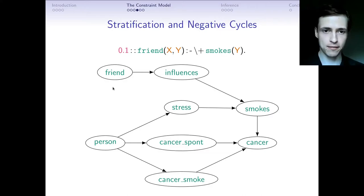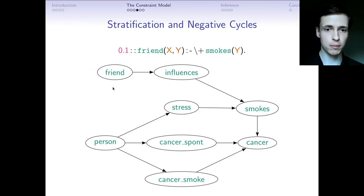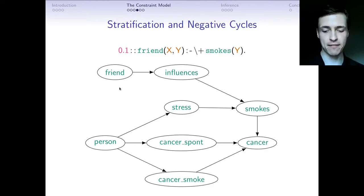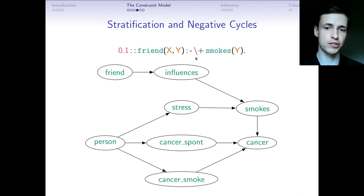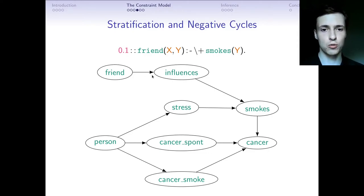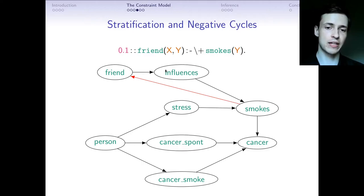The first reason to care about this graph is stratification — a condition that both logic programs and probabilistic logic programs need to satisfy to ensure a unique, well-defined answer for every query. We classify edges as positive or negative depending on whether the corresponding clause has negation. If we were to add an additional clause, this would create a negative edge from smokes to friend, creating a cycle with at least one negative edge — what we call a negative cycle.